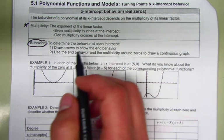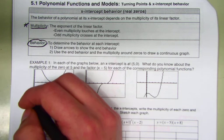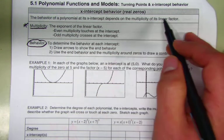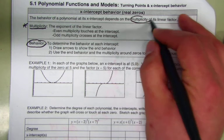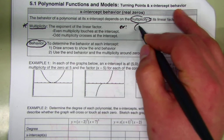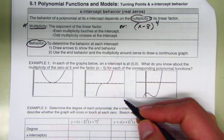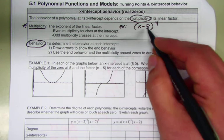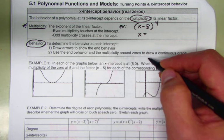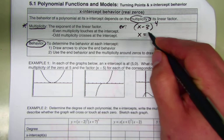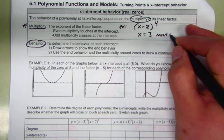So let's start with multiplicity. The multiplicity of a root, zero, or x-intercept is just based off of the exponent. For instance, if I have (x − 3) to the fourth, the x-intercept would be three — set it equal to zero and solve. And the multiplicity is just the exponent from the factor, so that would be four.